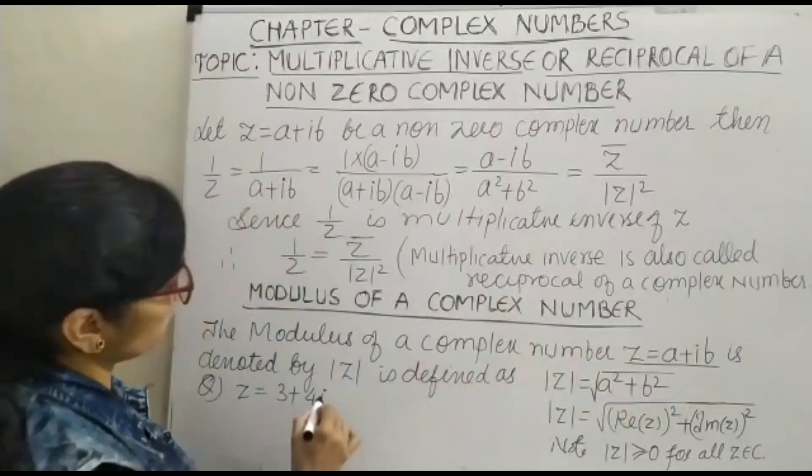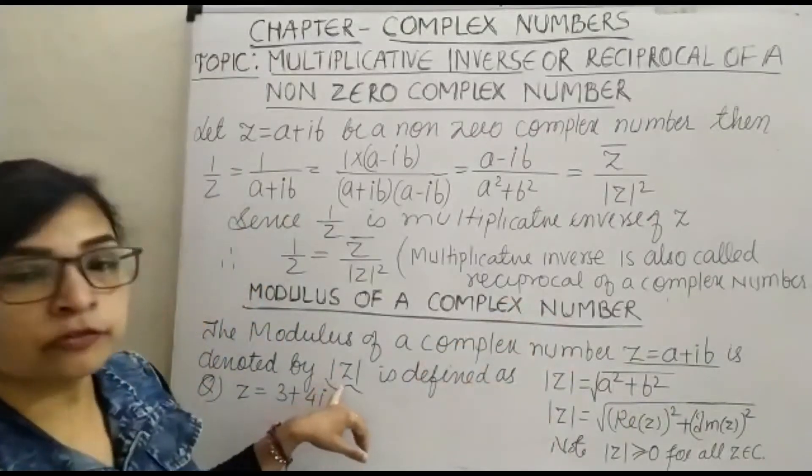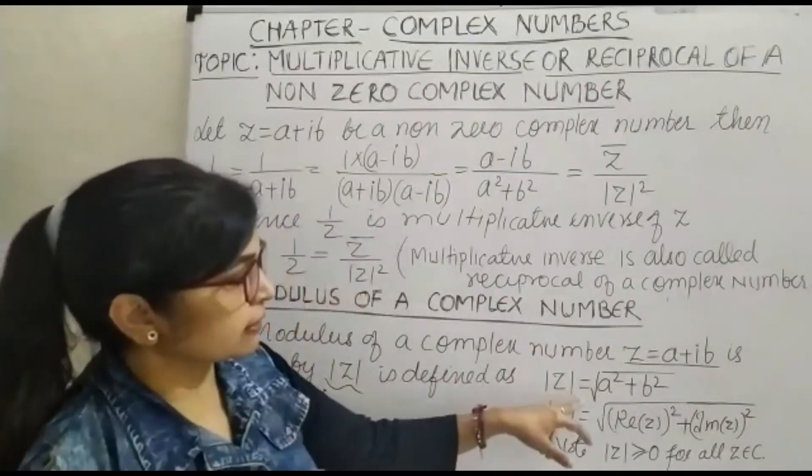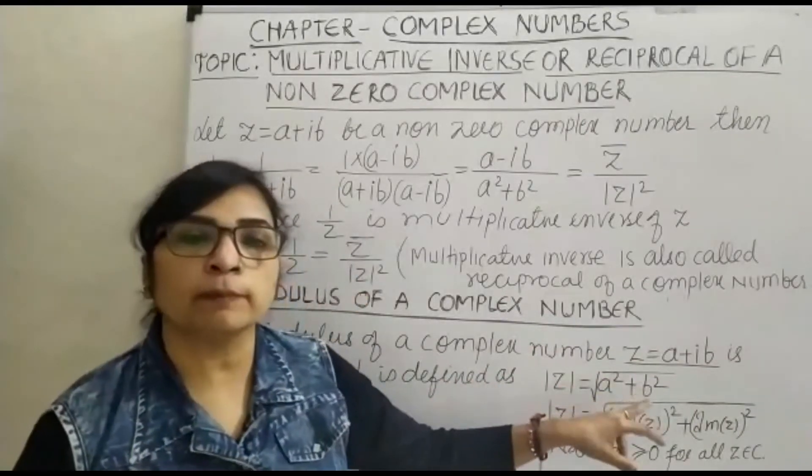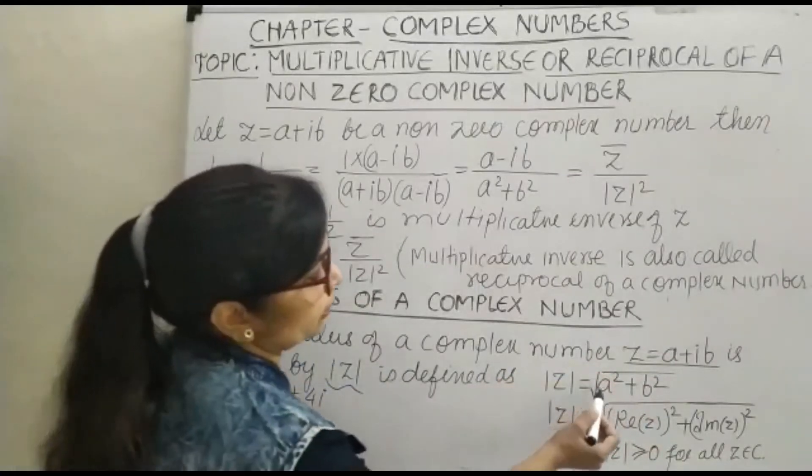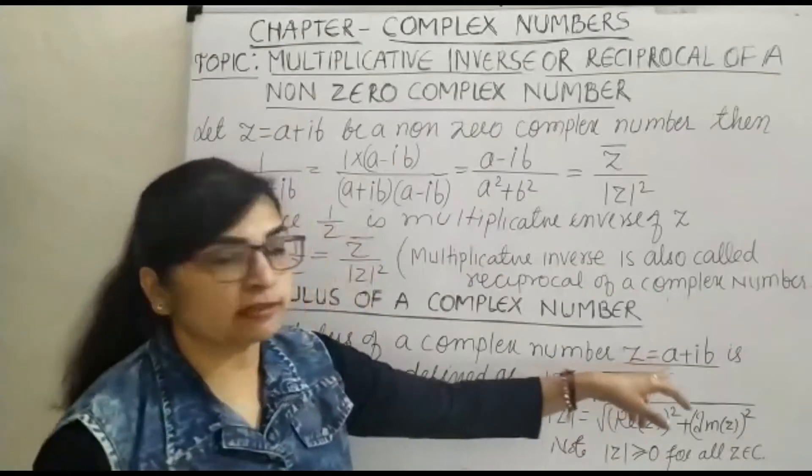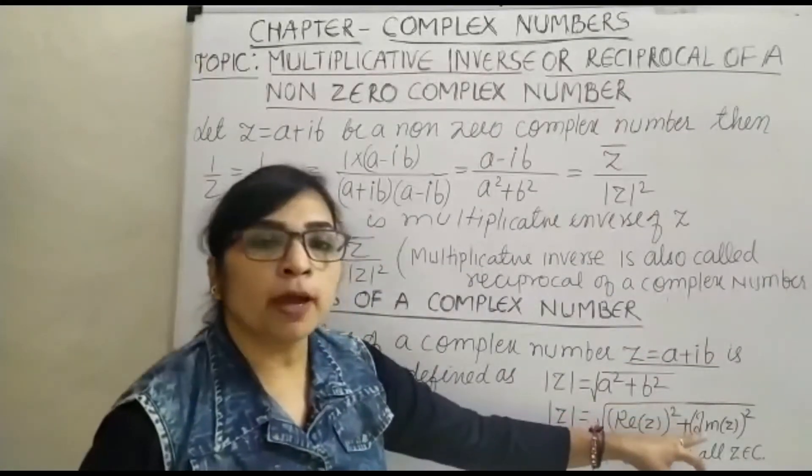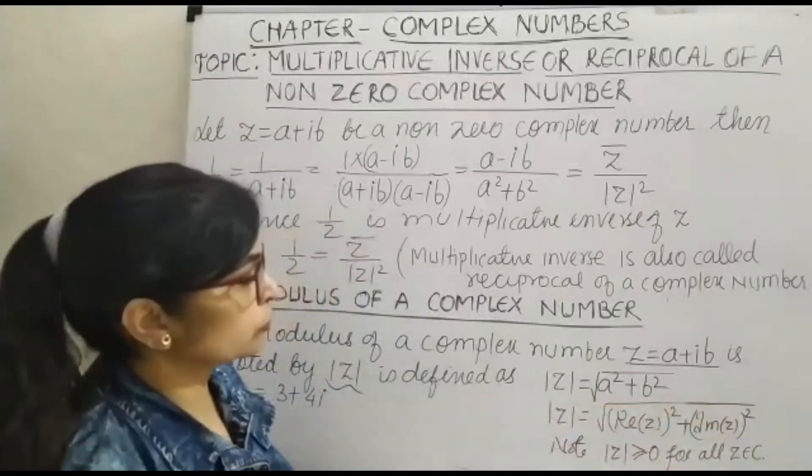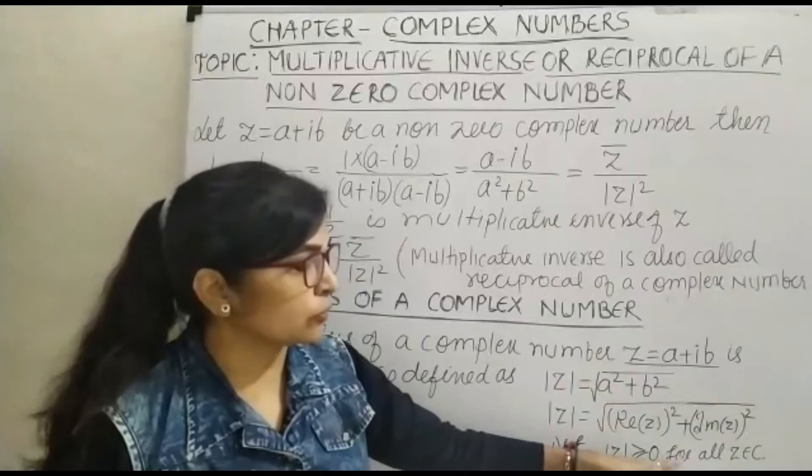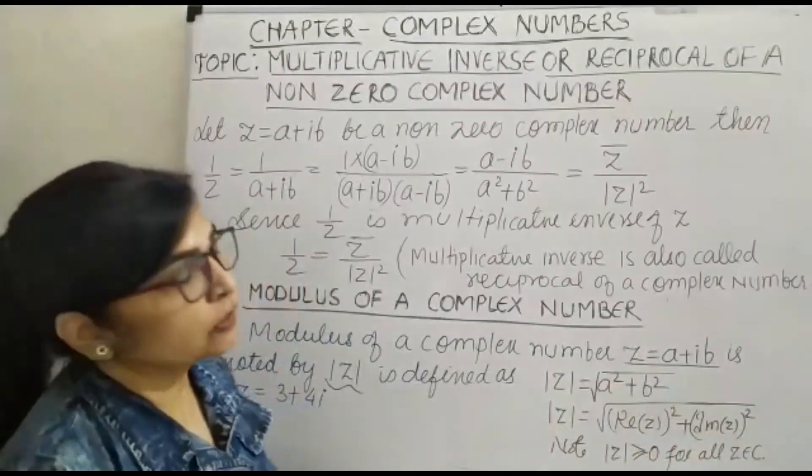Then the modulus of z is defined as modulus of z equals under root a squared plus b squared, which can be written as the square root of real part of z squared plus imaginary part of z squared. This is greater than or equal to zero for all z belonging to the complex numbers.